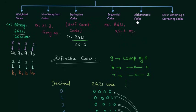The next type of code is the alphanumeric code. By using alphanumeric codes we can represent numbers, characters, symbols, and small instructions. One example of an alphanumeric code is the ASCII code, which stands for American Standard Code for Information Interchange.